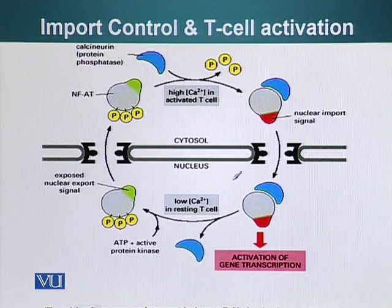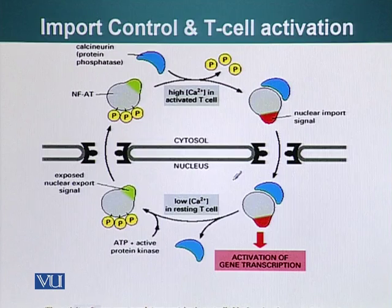One of those signals is the interaction of the TCR, T cell receptor, with the MHC2 molecule in the case of helper T cells, which is bound to a foreign peptide, and also a second signal coming from B7 and CD28.